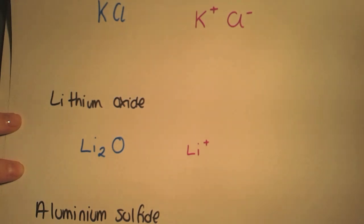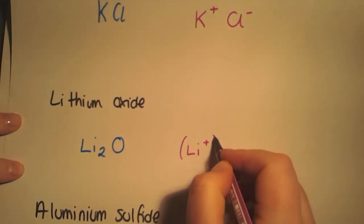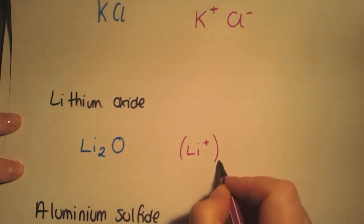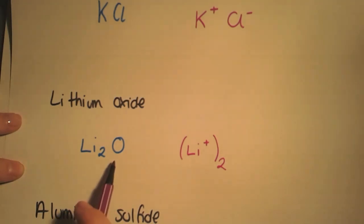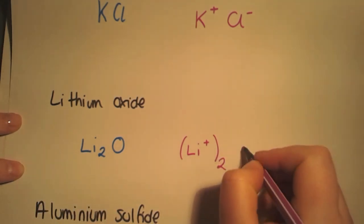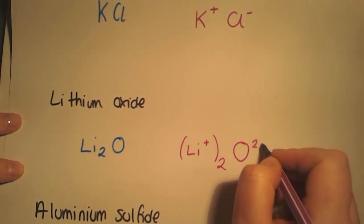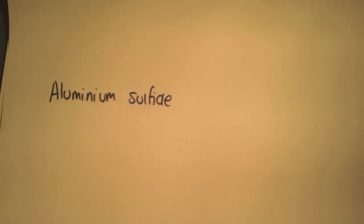However, we have two lithium ions here, so you must put brackets around the lithium and the two goes outside of the brackets. Oxygen is a non-metal, it's in group six, has a valency of two, means that it gains two electrons when it forms an ionic compound, so it becomes O2-.